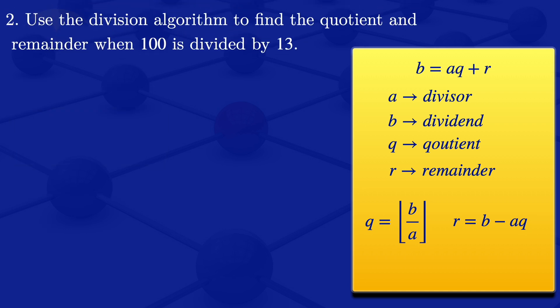I'll now move on to the next question. In this case, we are now having our divisor is 13 and our dividend is 100. So we have our B there is 100.